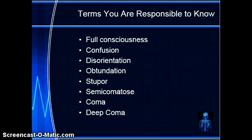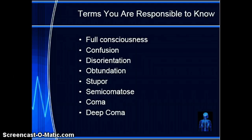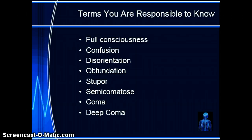Terms that you are responsible to know: full consciousness, confusion, disorientation, obtundation, stupor, semi-comatose, coma, and deep coma. When you're doing your reading throughout the chapters, make sure that you jot down the definition of these terms so you can recall what they mean and are able to discuss them.